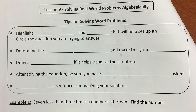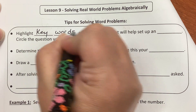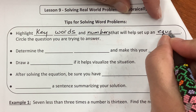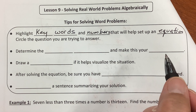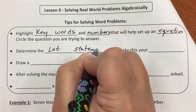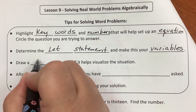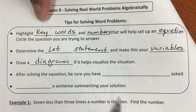Tips for solving word problems — and these go for all word problems we're going to be solving over the next couple of months. Start with highlighting keywords and numbers; that will help you set up an equation. Then determine the let statement and make that your variable. Draw a diagram if it helps.